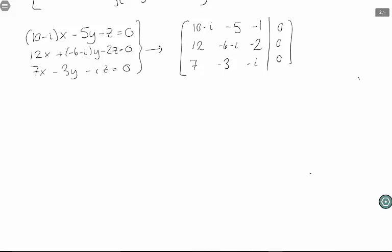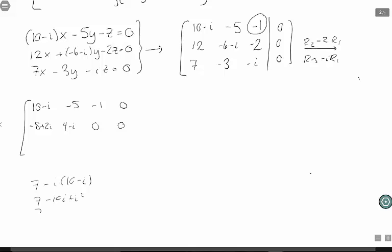This one we can solve by Gaussian elimination. I might pivot around the least nasty-looking thing, maybe this negative 1. I can take row 2 and subtract 2 row 1 from it, and I can also take row 3 and subtract i row 1 from it. For the third row, I'm taking 7 minus i times 10 minus i, which gives me 6 minus 10i.